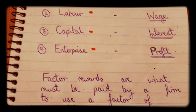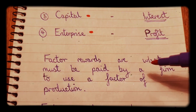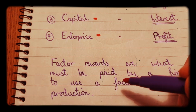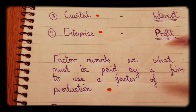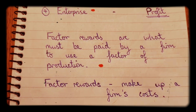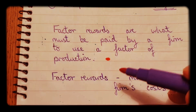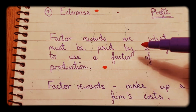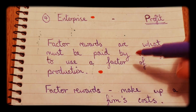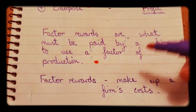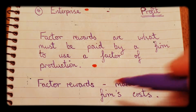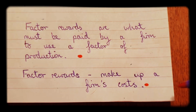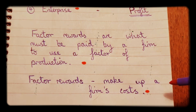The factor rewards are what must be paid by a firm to use a factor of production. The factor rewards, being what's needed to be paid by a firm to benefit from these factors of production, is like another name for a firm's costs — it's what a firm must pay to make output.